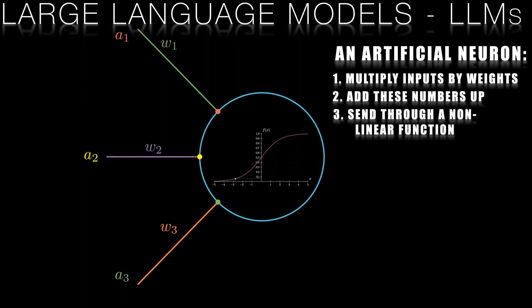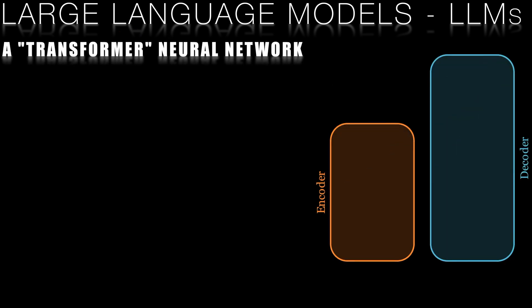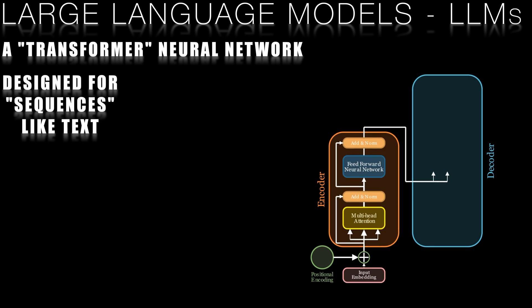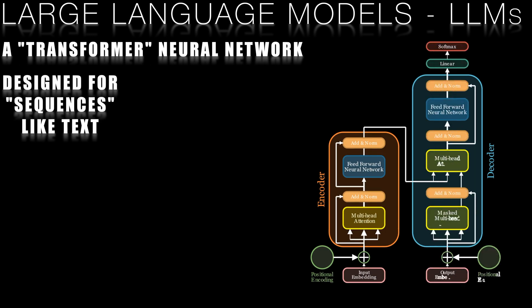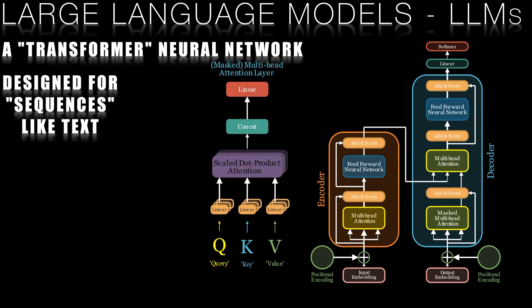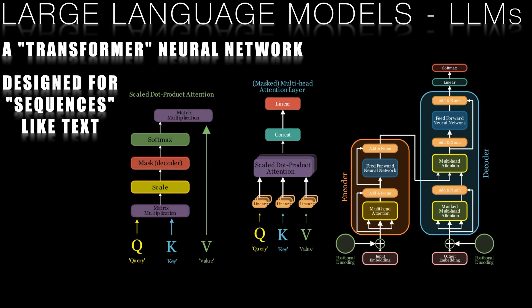LLMs, such as GPT-4, are built using neural networks with billions of connections between neurons. They rely on a specific architecture called the transformer, which is designed to process and generate data in sequences, like text. This architecture allows LLMs to handle context and relationships between different parts of the input text, contributing to the generation of both coherent and contextually relevant responses.